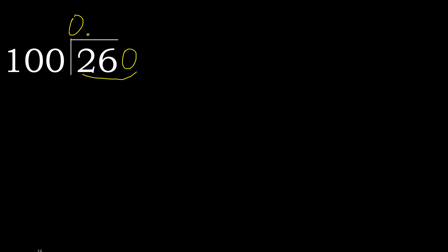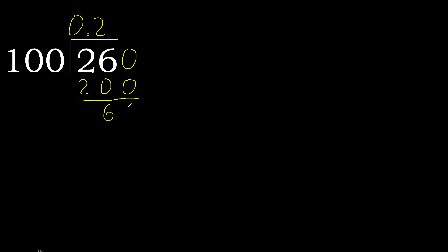100 multiplied by 3 is greater; multiply by 2 is 200, is not greater. Subtract: 60. Next — there is no number, therefore complete. Always complete with 0. 0 point — the point is here, ok.